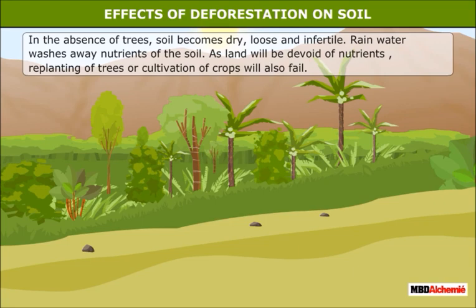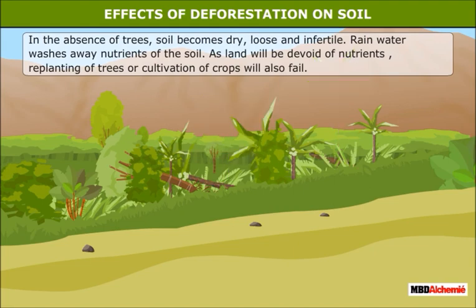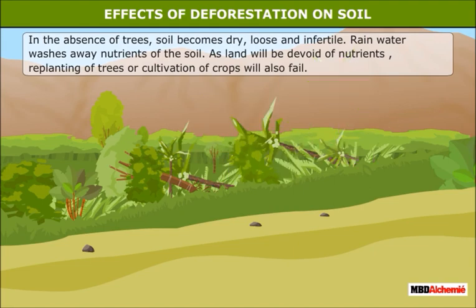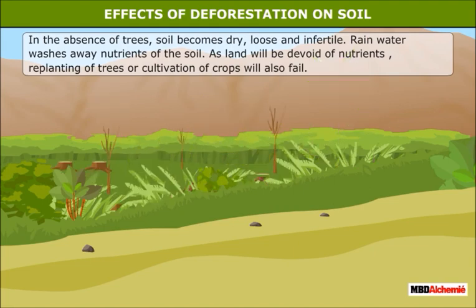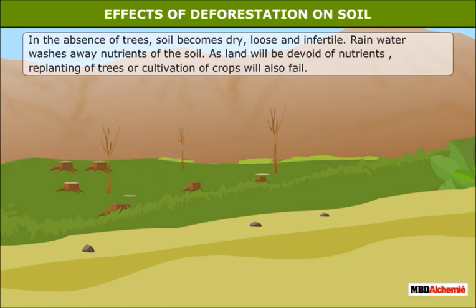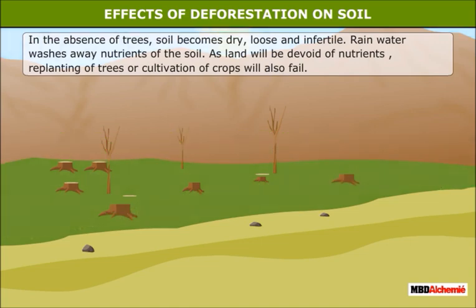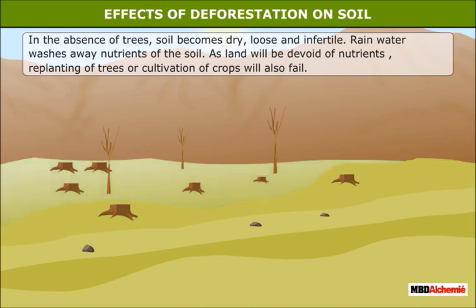Effects of deforestation on soil: Deforestation poses a serious threat to our environment. In the absence of trees, soil becomes dry, loose and infertile. Rainwater washes away nutrients of the soil. As land will be devoid of nutrients, replanting of trees or cultivation of crops will also fail.